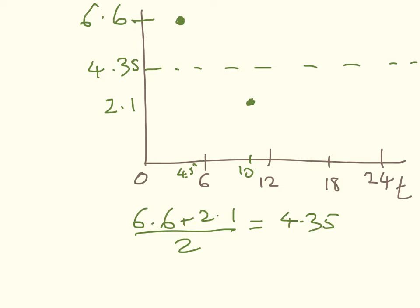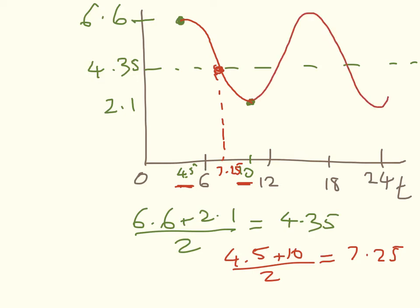The next thing I want to do is sketch in my sine curve. What would be nice is to get the point where it's going to go through my midline, somewhere about here. This point is going to be halfway between the maximum water level and the minimum water level. So again I'm calculating an average of two numbers: 4.5 plus 10 divided by 2 equals 7.25.